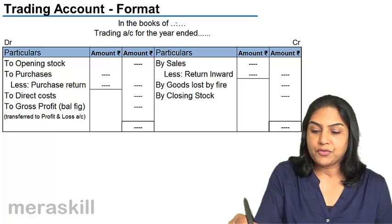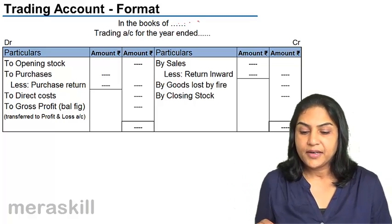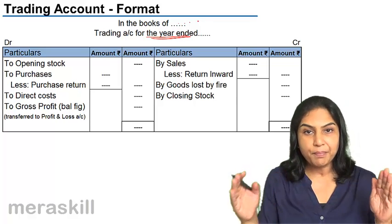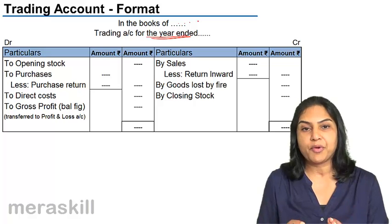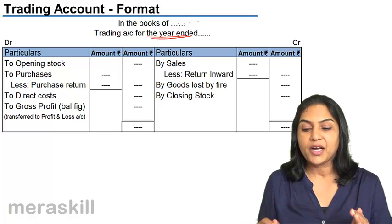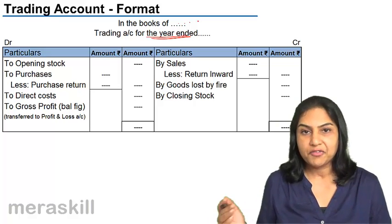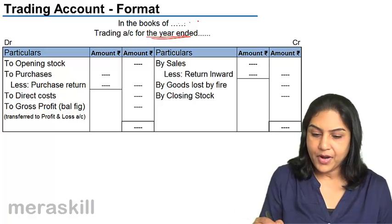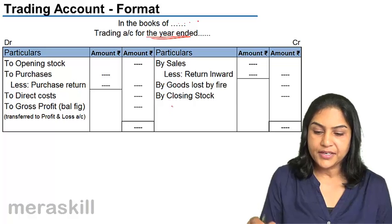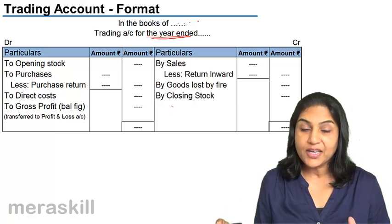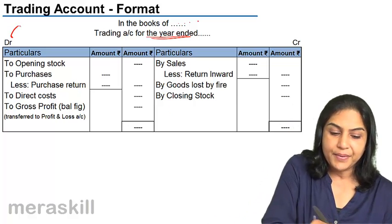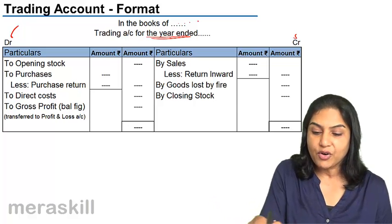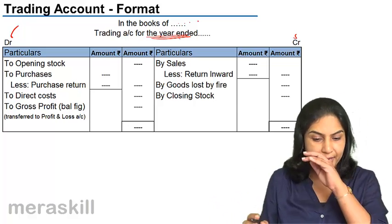In the books of the sole proprietor, the trading account is prepared for a period. Assuming that we are preparing it for a year, it would be the trading account for the year ended 31st March. The trading account is an account, so it has a debit side and a credit side. It has no date column, because the trading account is for the year, prepared at the end of the year.